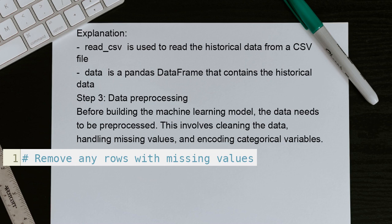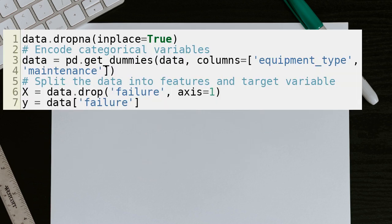Step 3: Data preprocessing. Before building the machine learning model, the data needs to be preprocessed. This involves cleaning the data, handling missing values, and encoding categorical variables. And here is the rest of the code.